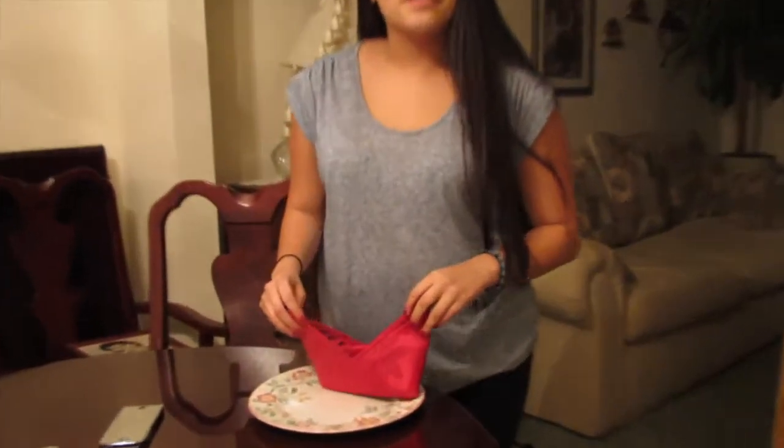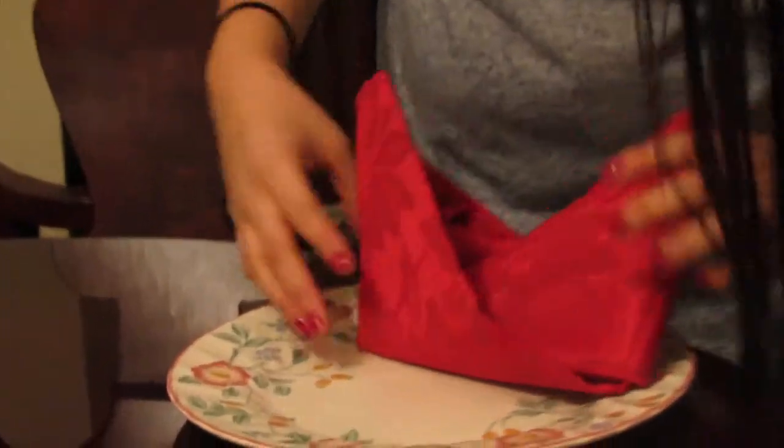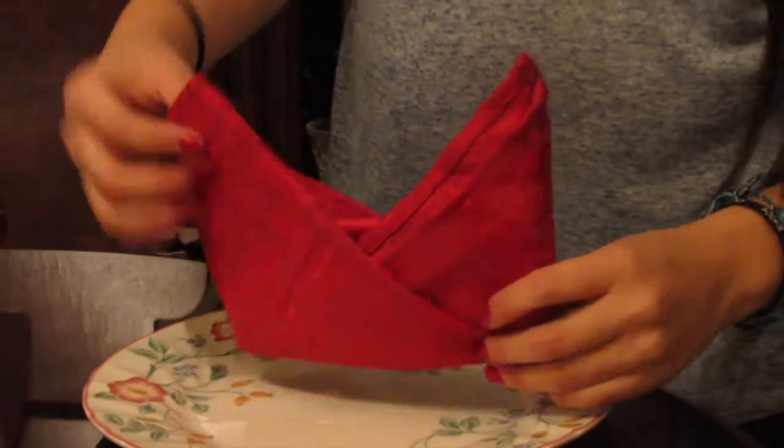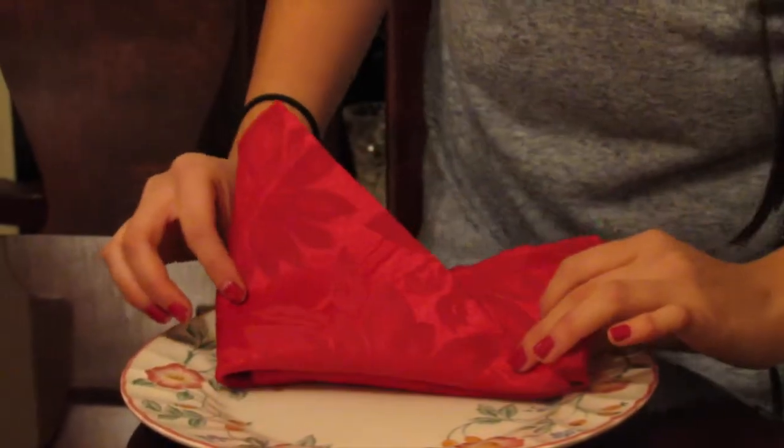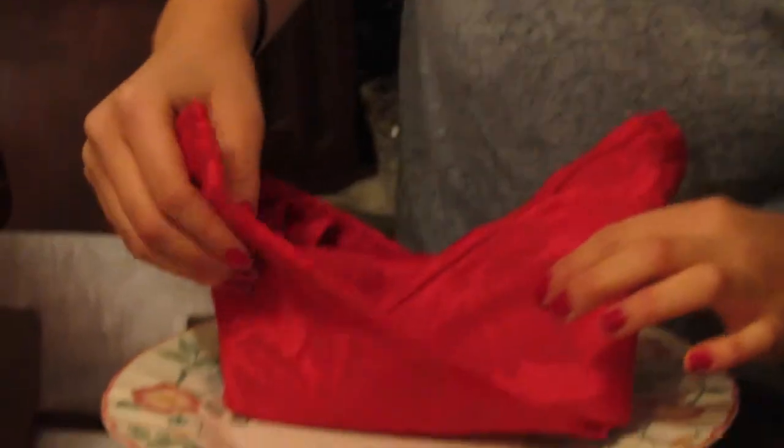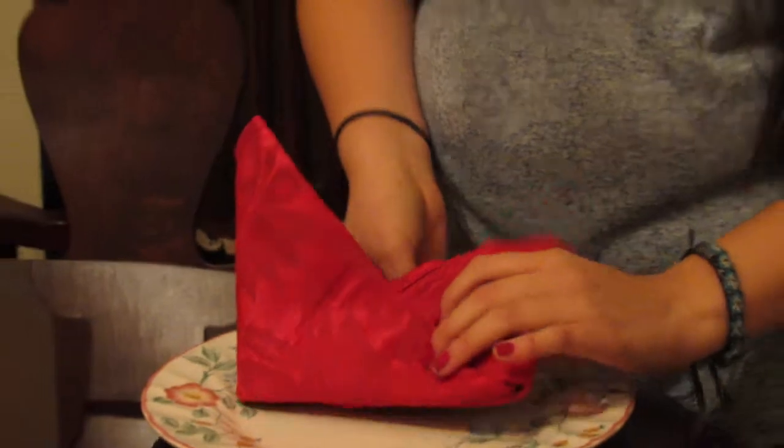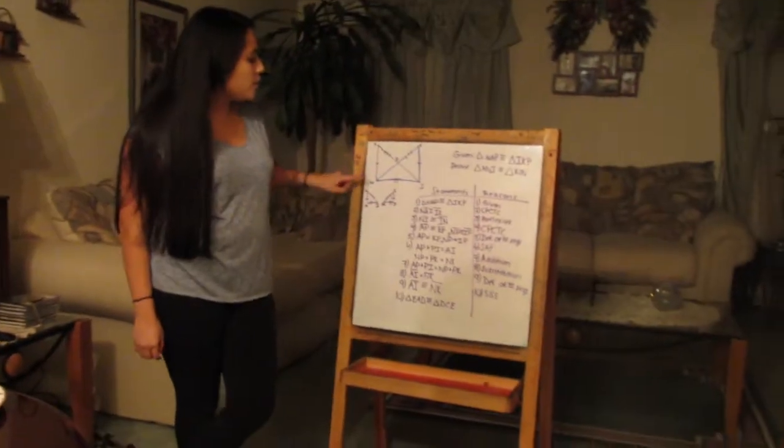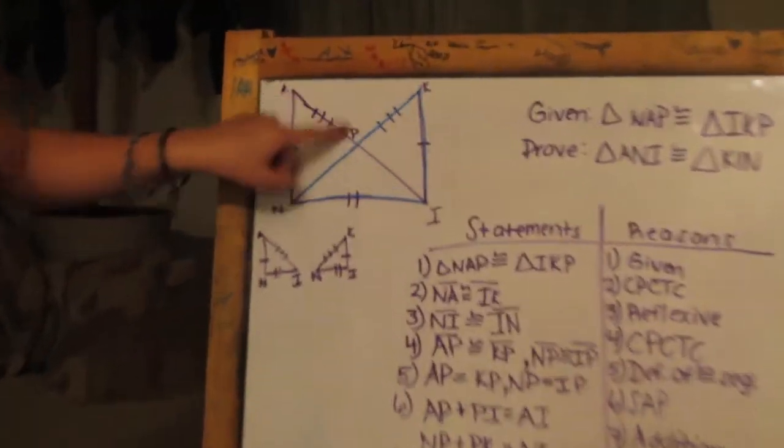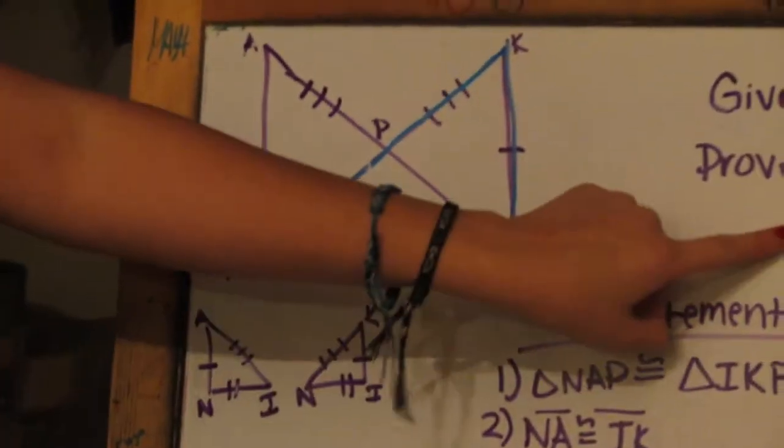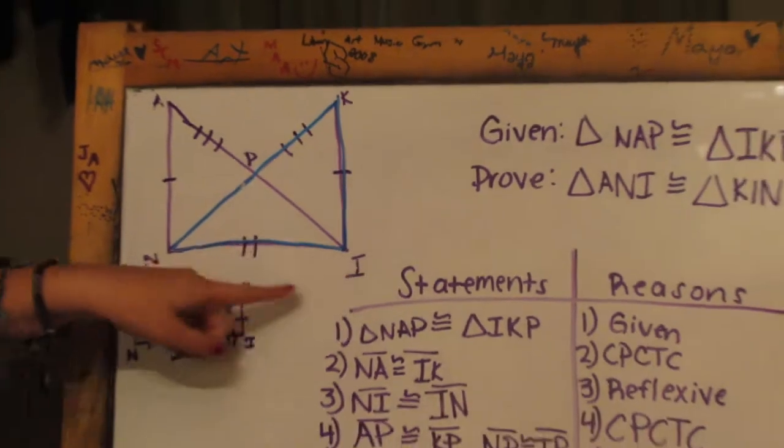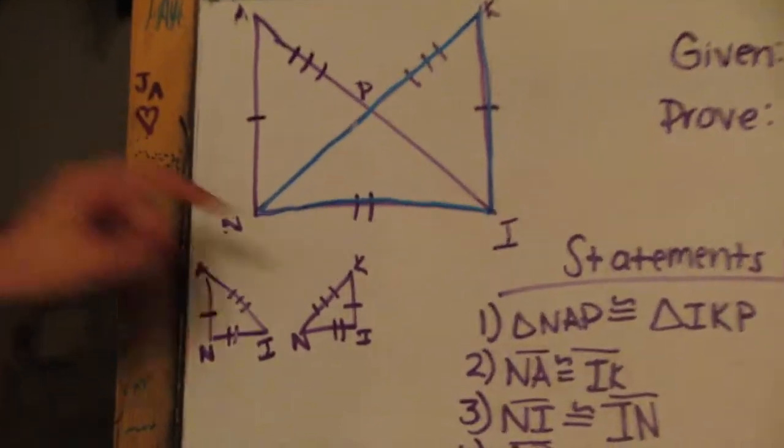Alright guys, now we're going to teach you about overlapping congruent triangles. Say you're setting up a table for a Christmas party, as I am right here, and you make a fancy fold into two triangles. You have to make sure that this triangle is congruent to this one in here so that it doesn't fall apart and just totally discombobulate. So, here we set up a proof where the given was triangle NAP is congruent to IKP. And we're supposed to prove that triangle ANI is congruent to KIN.